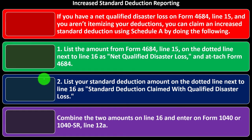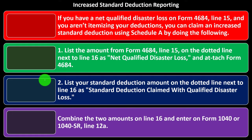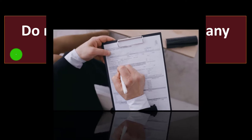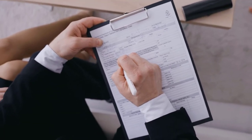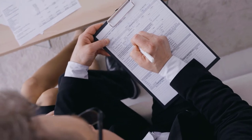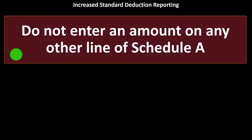In essence, you're combining this one deduction — which was normally itemized — with the standard deduction, getting the benefit of this item even though it's on an itemized deduction form. For increased standard deduction reporting, do not enter an amount on any other line of Schedule A. In that event, you wouldn't be entering anything else on Schedule A, because it's not like you've opened up the threshold to take other deductions.